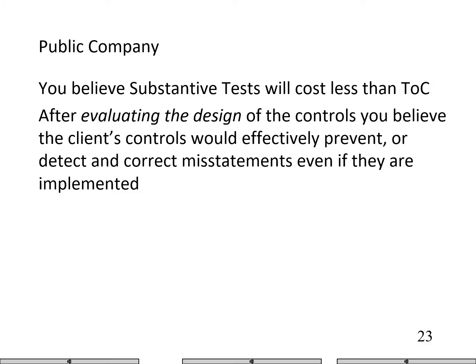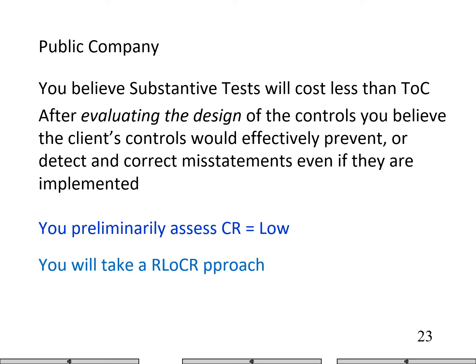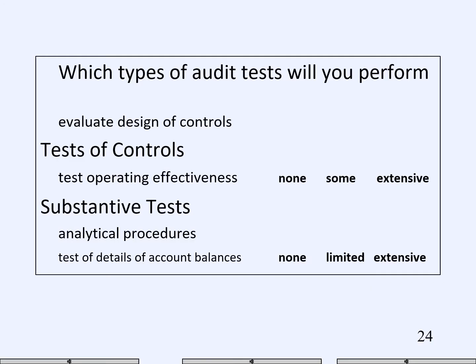Because the controls are not effective, we'll have to perform extensive substantive testing. Next scenario: you believe substantive tests will cost less. After evaluating the design of the controls, you believe the controls would be effective. Okay, so it's a public company — I'm going to preliminarily assess control risk is low and take a reduced level of control risk approach. Because it's a public company, the clients are more interested in receiving a report that their controls are effective than saving a little money. Always evaluate the design. If we want to report that the controls are effective, we're going to need to perform extensive test of controls. Always analytical procedures. And if the controls are effective, we can limit the extent of our substantive test.